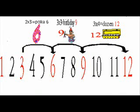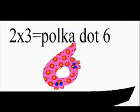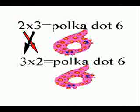And also keep in mind this very important rule, that once you know a timetable, you also know its opposite. Like 2 times 3 is polka dot 6, and also 3 times 2 is polka dot 6.